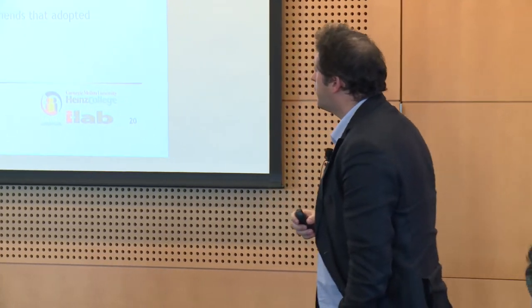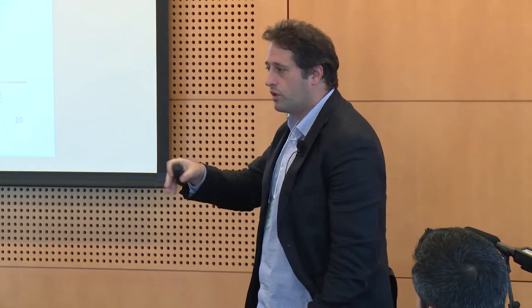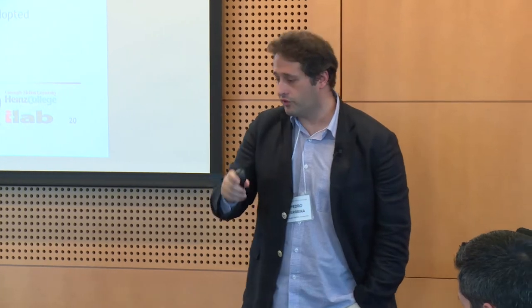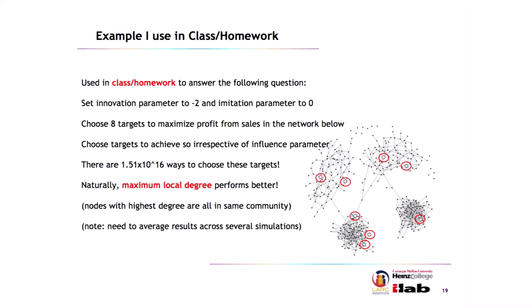You can define these three parameters. To give an idea of what I do with students: I have a homework that we start in class and they pursue further the next week. I tell them: here is a network with four communities of different structures. Set the innovation parameter to minus two and the imitation parameter to zero — I'm fixing those two — and vary the influence parameter to understand how it changes diffusion. Then: choose eight targets out of 400 people to maximize profit from sales in this network. At this point in the course we've already discussed network properties and centrality.